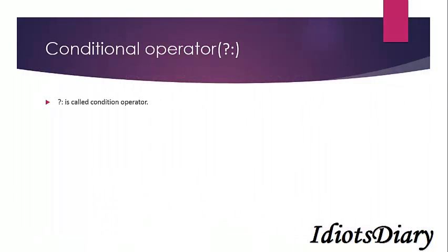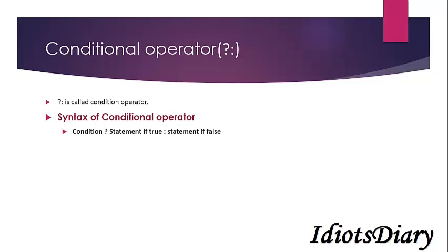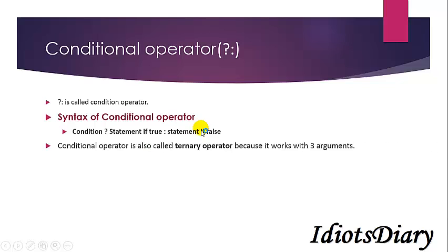Let's start our discussion with the conditional operator. Conditional operator is one more way to make decisions in C. The question mark colon sign is used to represent the conditional operator. The syntax is: write the condition, then question mark, then the statement if condition is true, colon, and the statement if condition is false. Conditional operator is also called ternary operator because it works with three arguments.